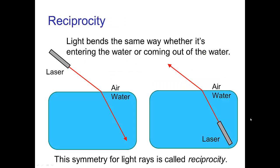It's important to understand that when light rays bend as they pass from one material to another, that bending is the same regardless of direction. For example, a light ray passing from air into water follows the same path as if we switched it around and had the light ray coming out of the water into the air. We can trace light rays in one direction or switch it around, and the path is always the same. This symmetry principle is called reciprocity.